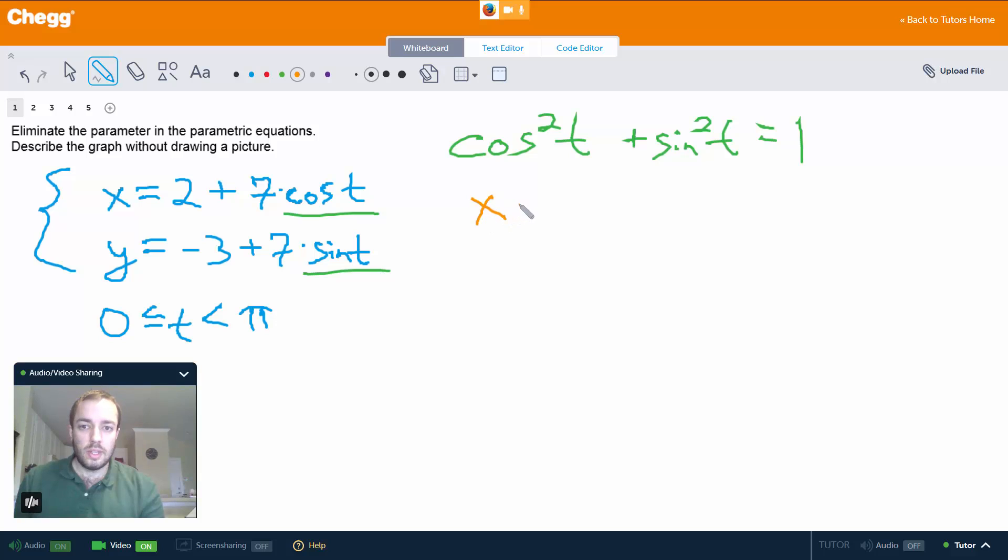So x = 2 + 7cos(t) means x - 2 = 7cos(t).